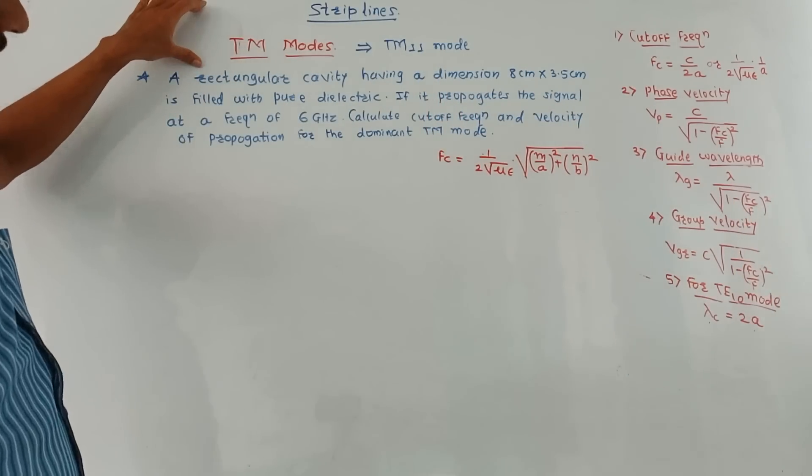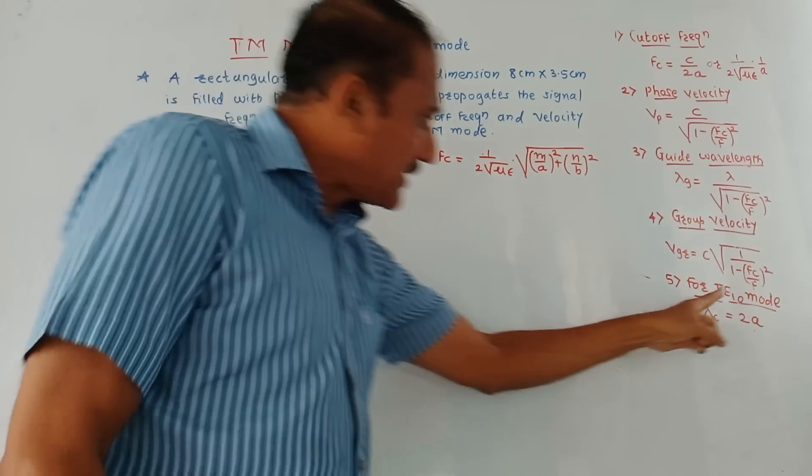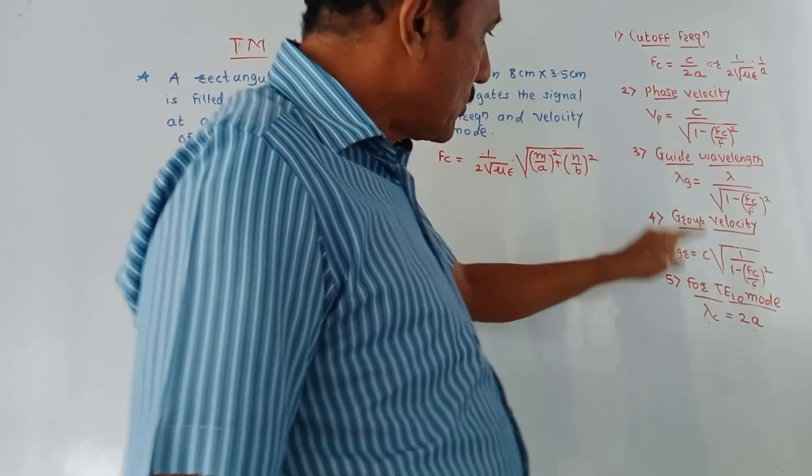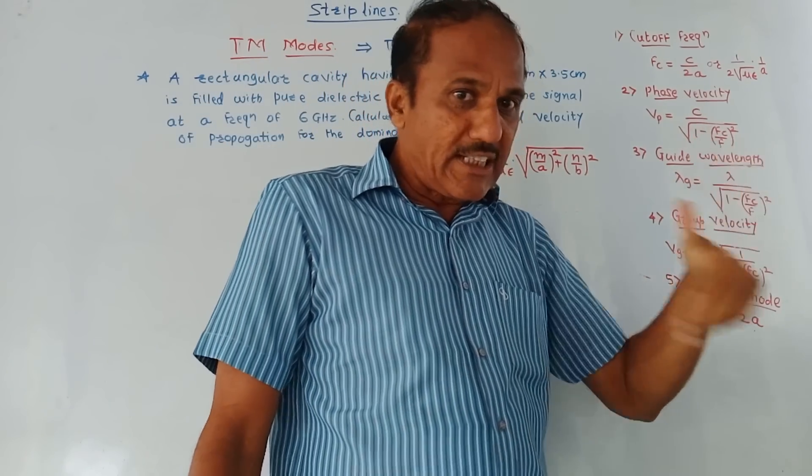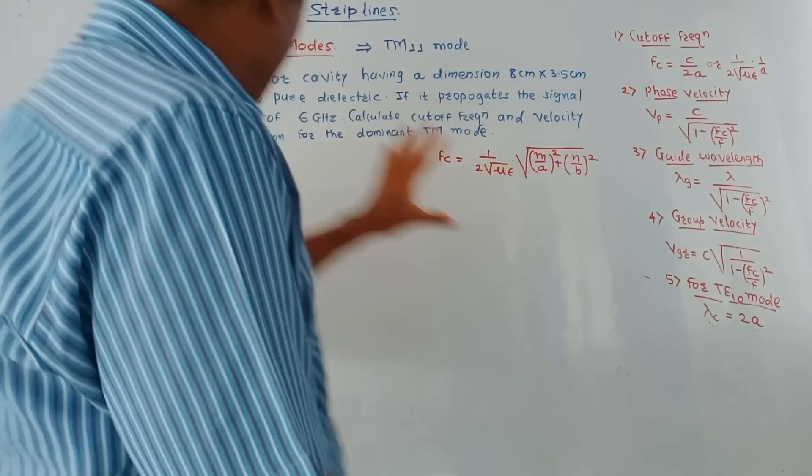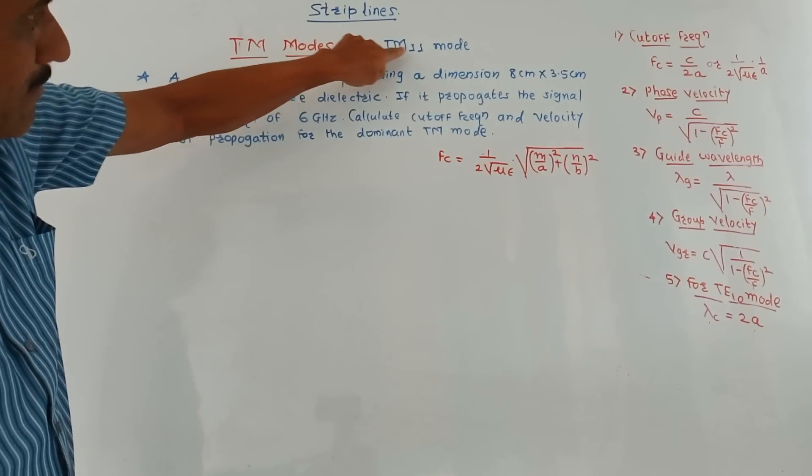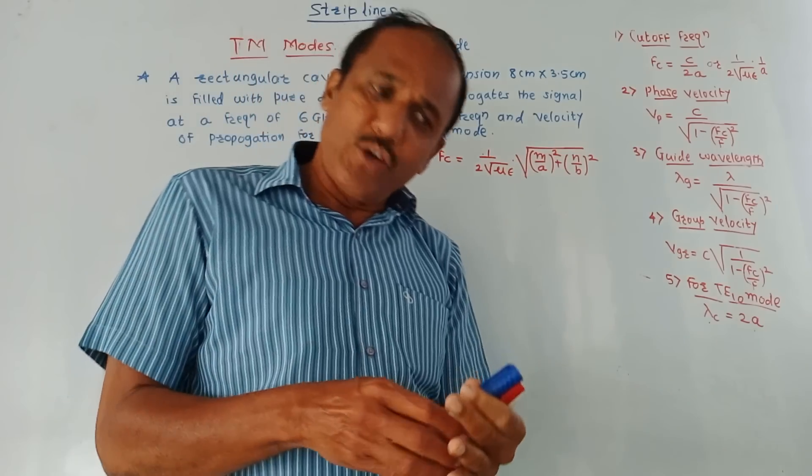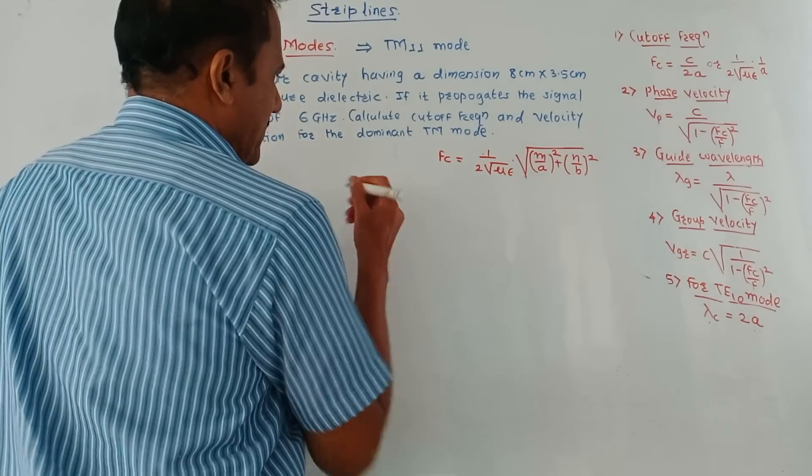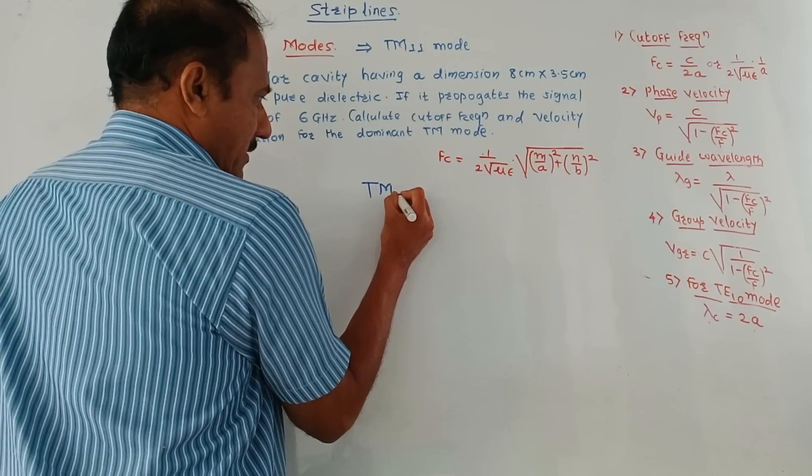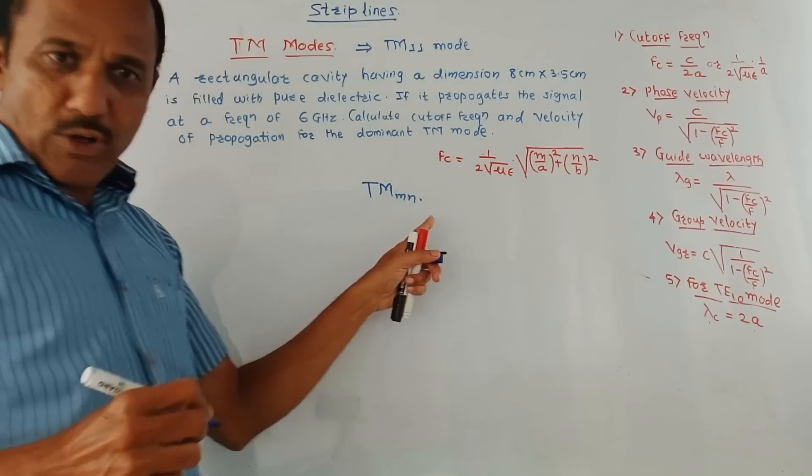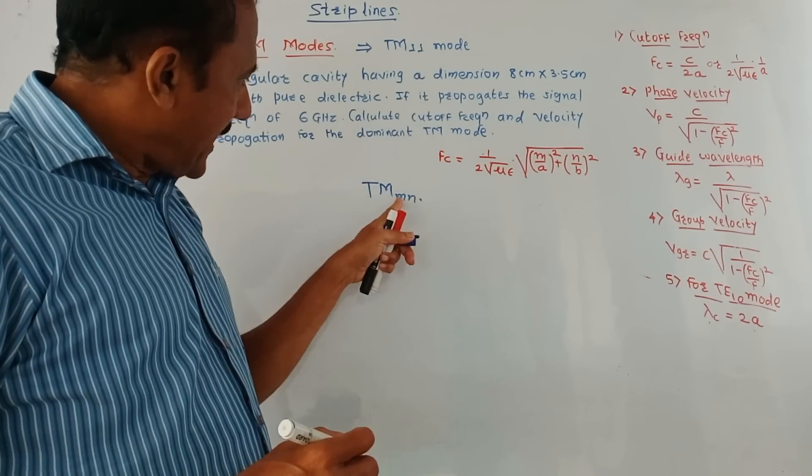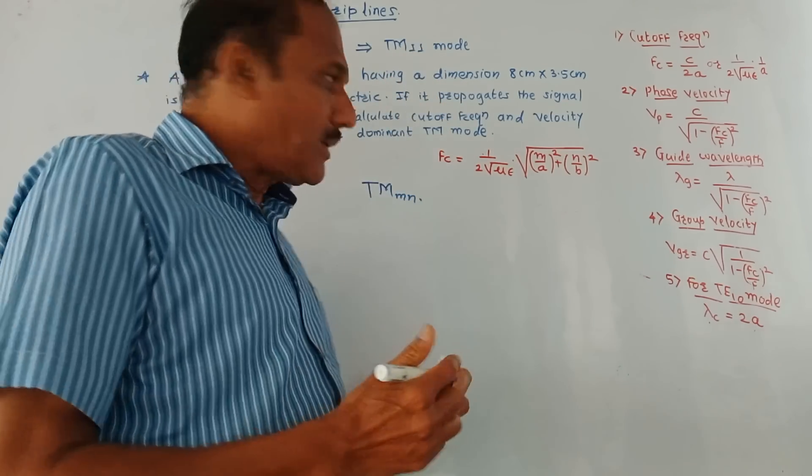Now we discussed in TE modes, the dominant mode is TE10 mode. This was the list of formulae which we studied in earlier video. So TE10 mode is a dominant mode in transverse electric mode. Whereas in case of TEM, TM11 mode, that is transverse magnetic 11 mode, is a dominant mode. We already studied the basic notation is TE or TM to the base small m small n. So this is TM11, that is m equals 1, n equals 1, it is the dominant mode.